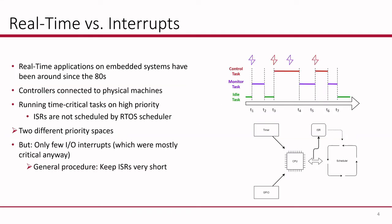Let's start with the introduction. Real-time systems have really been around since the 80s. You usually have controllers that are connected to physical machines, and those controllers have some sensors, for example, which are used to control some actors. You have a few real-time tasks running on those real-time systems and these real-time tasks have priorities. Depending on that priority, a task will preempt the other tasks to get the CPU time as soon as possible.